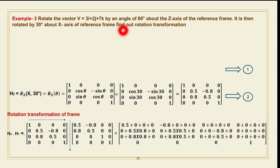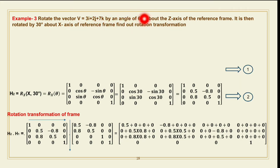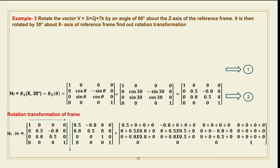So what are the different given parameters involving this example? Vector v is given as v = 3i + 2j + 7k. The first angular inclination is rotation about the Z axis at an angle of 60 degrees, and the second is rotation about the X axis at an angle of 30 degrees. You have to remember both formulas: rotation about the X axis at angle theta, and rotation about the Z axis at angle theta.